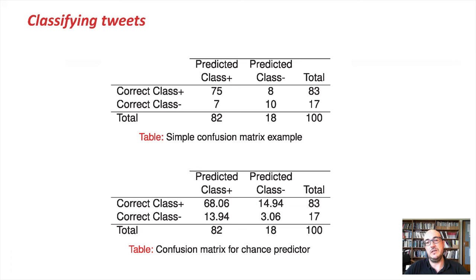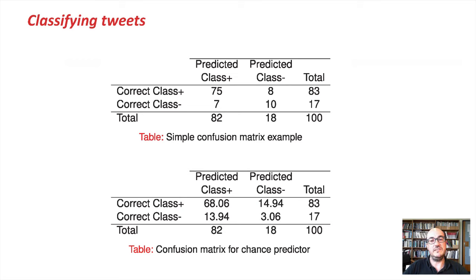To answer this, one way is to look at a random classifier — a classifier that is predicting randomly but following the same distribution between positive and negative classes. In that confusion matrix, we can see this classifier is getting 82% of instances as positives and 18% as negatives. It predicts the positive class correctly 68% of the time, and the negative class correctly only 3% of the time. That gives an accuracy of 71%. So if our classifier has accuracy higher than 71%, we can say it's a good classifier; if less, it's not doing quite well.